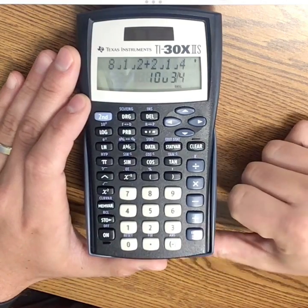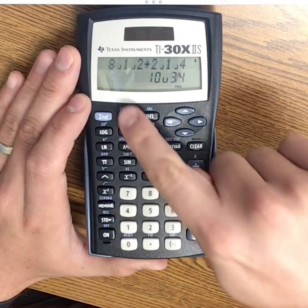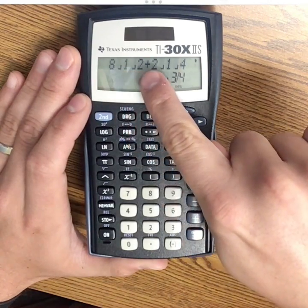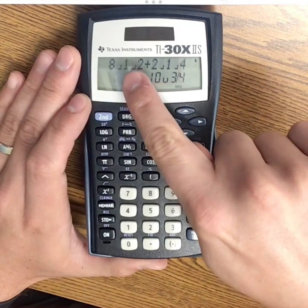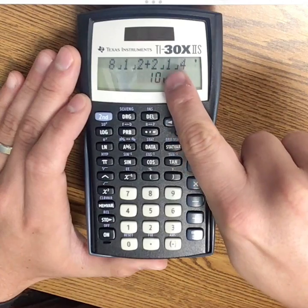If I press enter, I get ten and three-fourths, which makes sense. Eight and two make the ten. Then, one-half and one-fourth is like two-fourths and one-fourth, which gives you three-fourths.